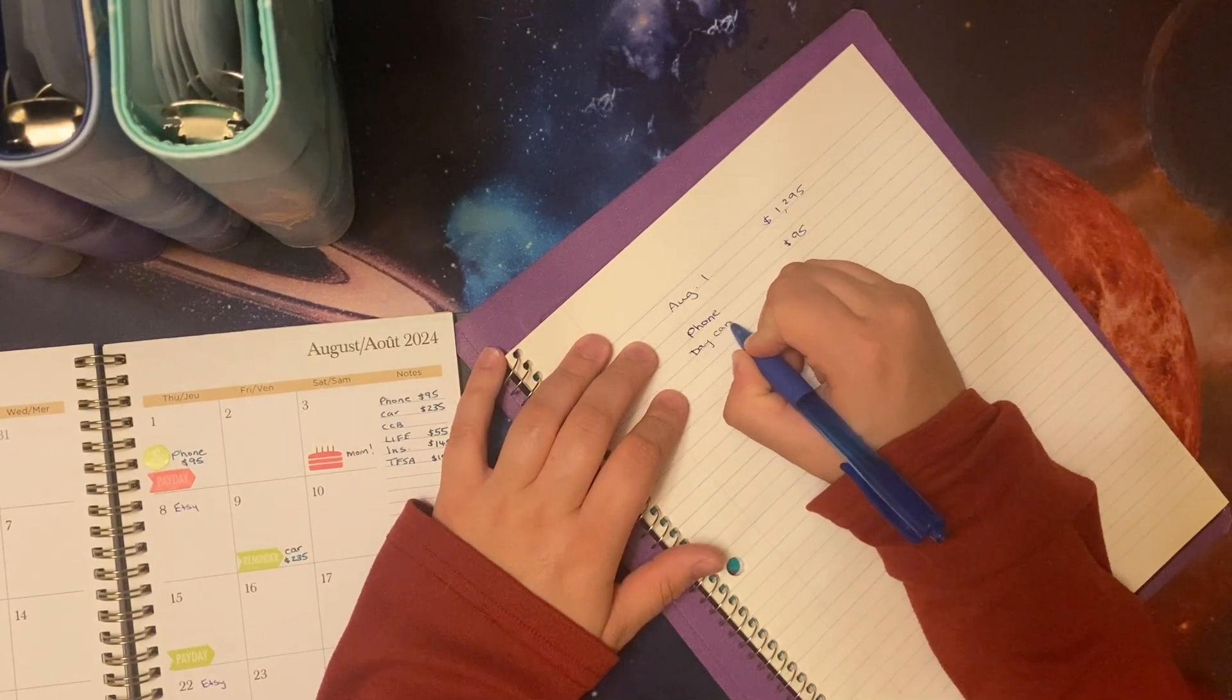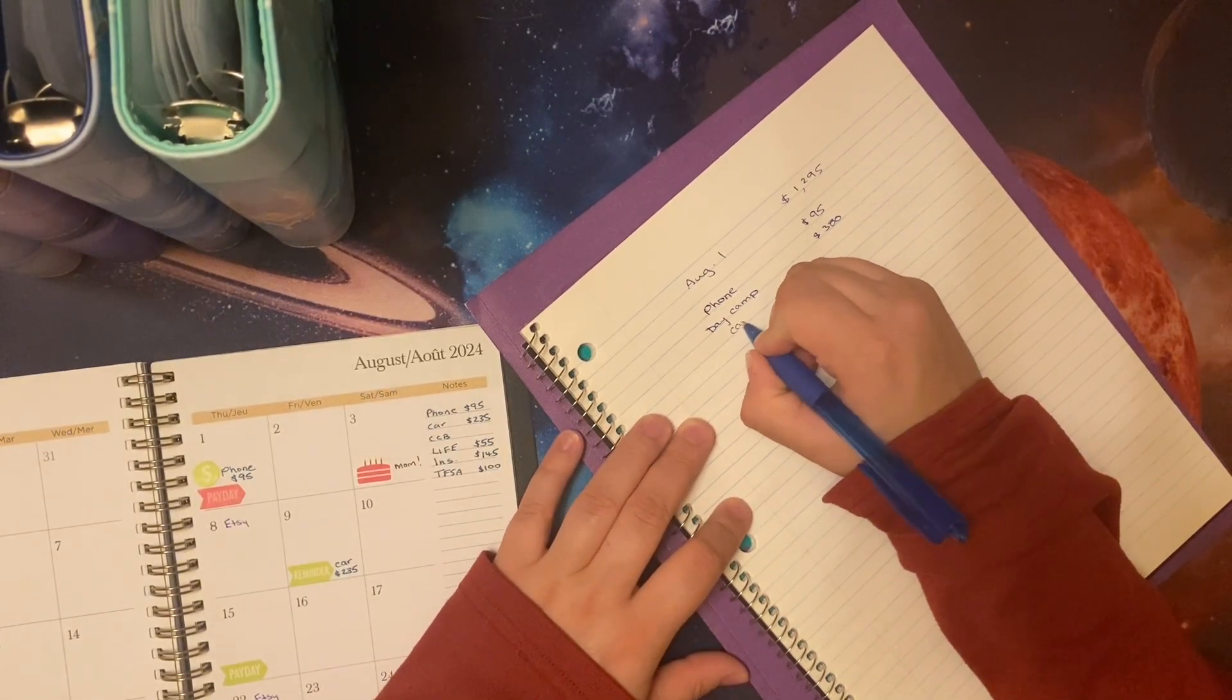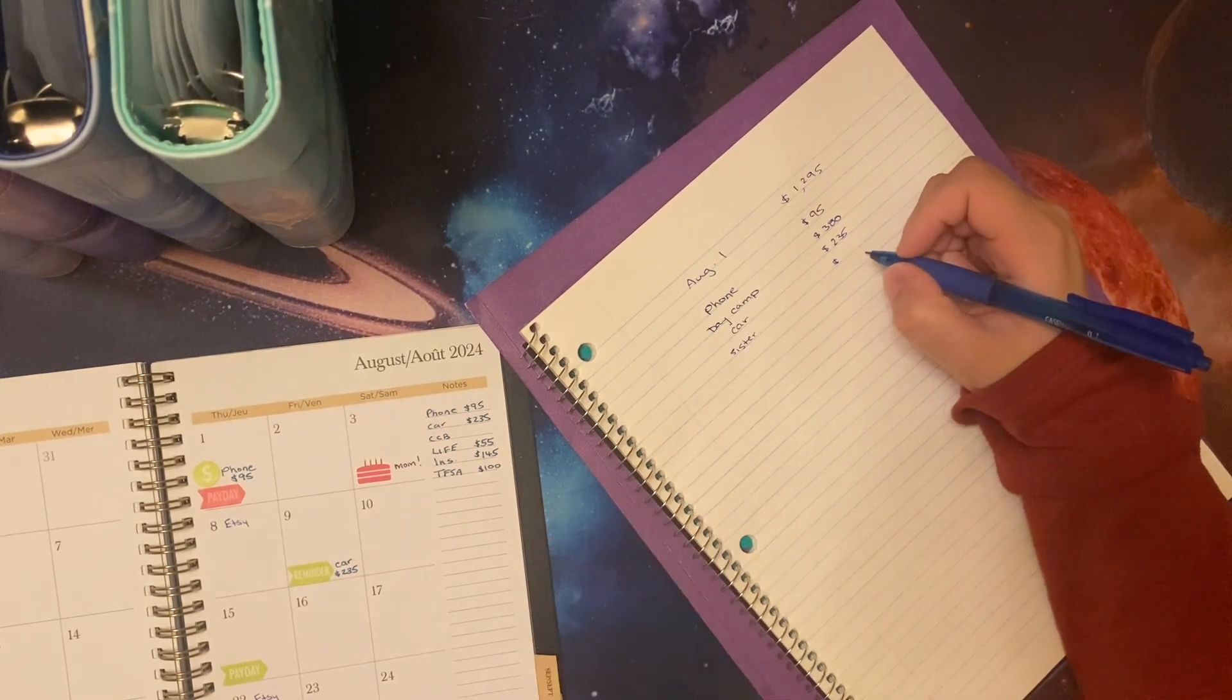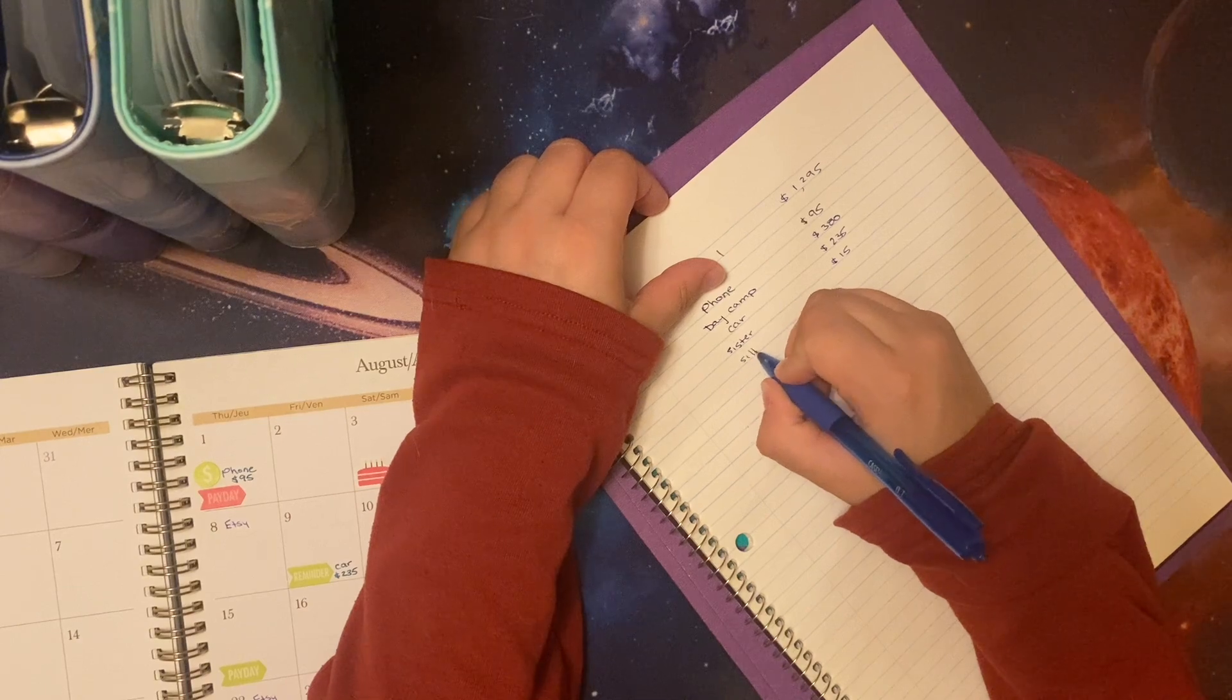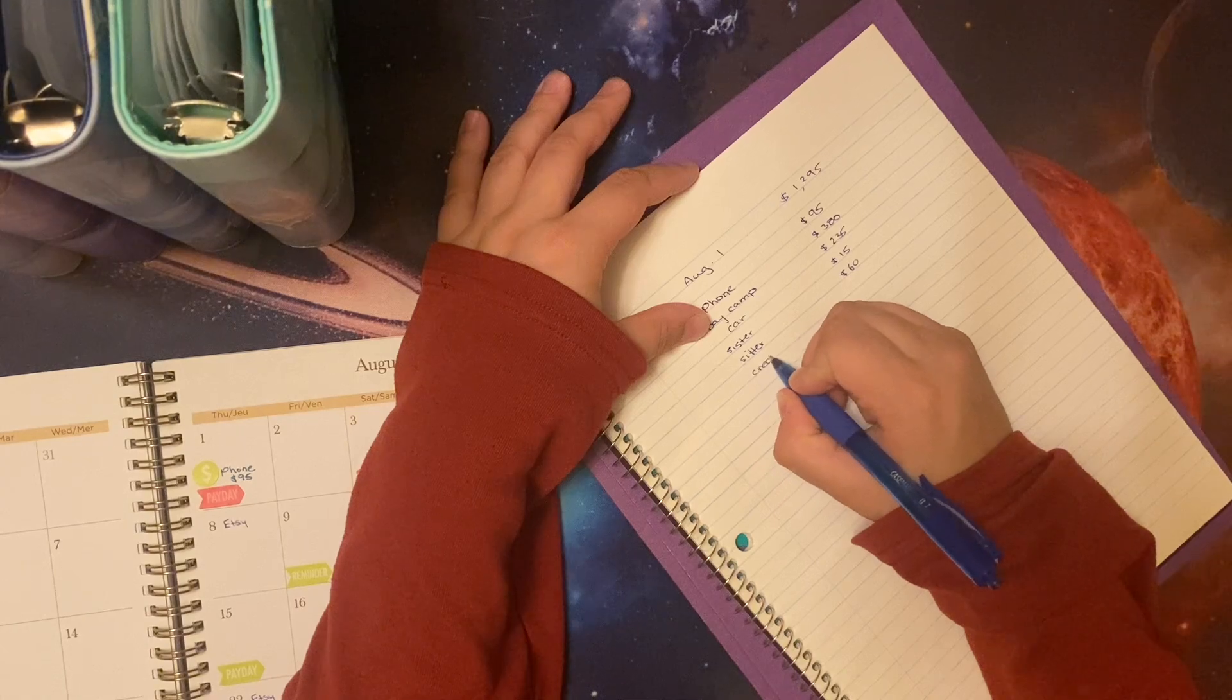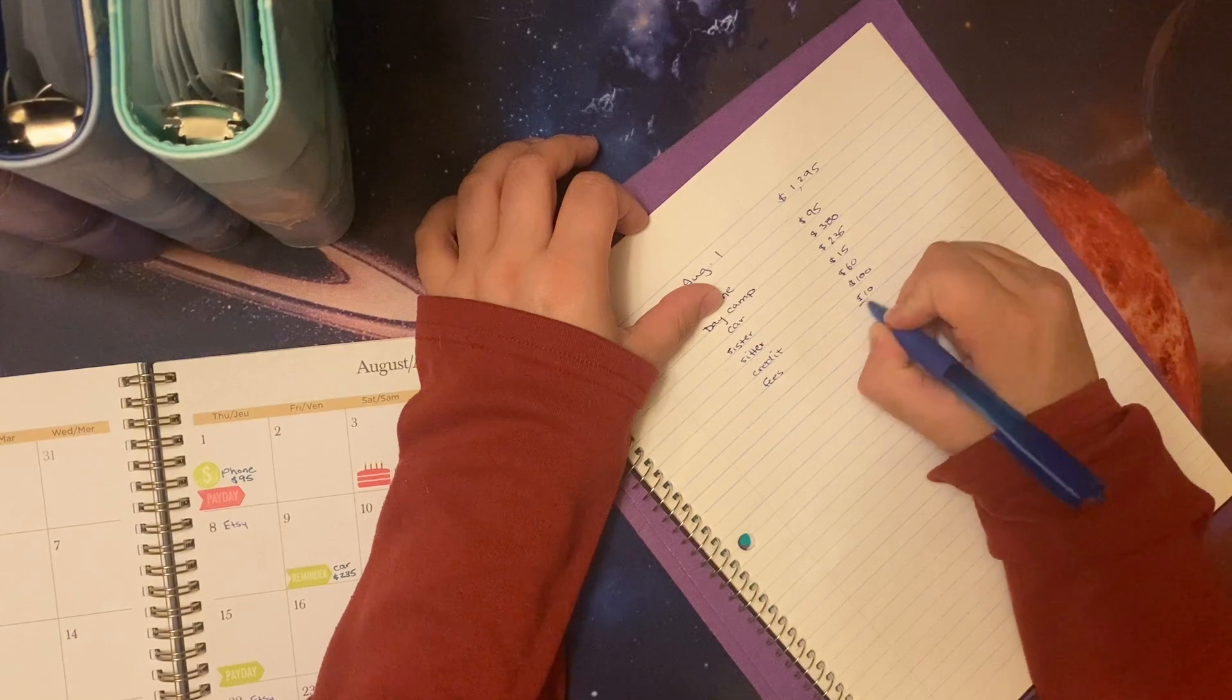All right. And then day camp. So I owe 200. So 380. I'm so excited for when day camp is done. Childcare costs more than my car payment. That's so crazy. 235 for my car payment. My sister and I went and saw Twisters on the weekend and I paid her admission. So it was 15 bucks. She told me to just send her 15 this pay. Then my sitter, we had a full week of holidays, then I had a call in day. So I only owe her for four days, which is 60. And then credit because I do have expenses constantly coming out of my credit card. So I'm going to put a hundred dollars and then fees for the bank I'm going to put 10.